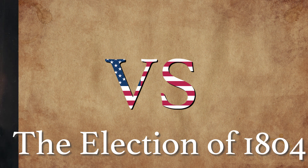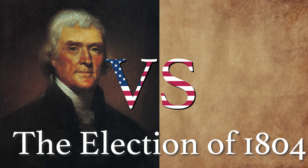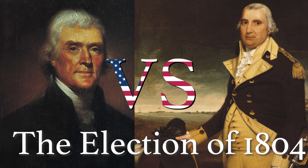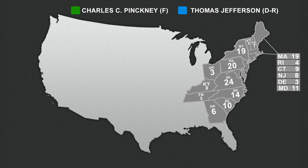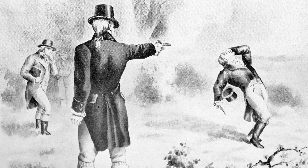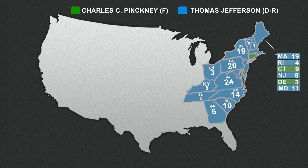The election of 1804: Thomas Jefferson vs. Charles Pinckney. This was the first election where electors were required to specify their choices for president and vice president separately. Jefferson easily crushed Pinckney. Unfortunately for the Federalist Party, their most well-known candidate, Alexander Hamilton, died in a duel in July of 1804. Jefferson's 45 percentage point victory margin remains the highest in a presidential election in which there were multiple major party candidates.